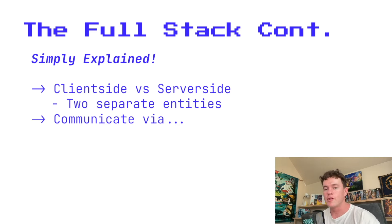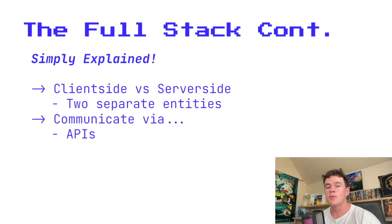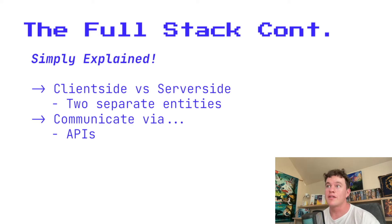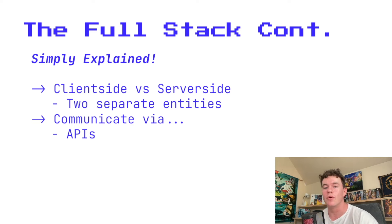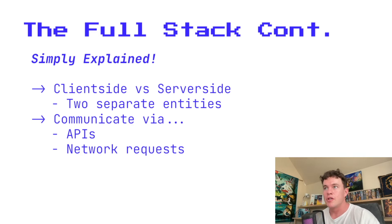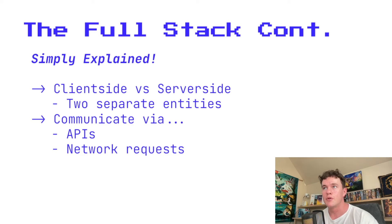These two separate entities come together to form the full stack when we teach them how to communicate with one another. The two primary means of communication are APIs — Application Programming Interfaces — which act as the middleman, like a tap's twisty handle that makes water come out. The actual communication structure is known as a network request. We make network requests via APIs to communicate information and states between the client side and server side, joining the front end and back end into the full stack.